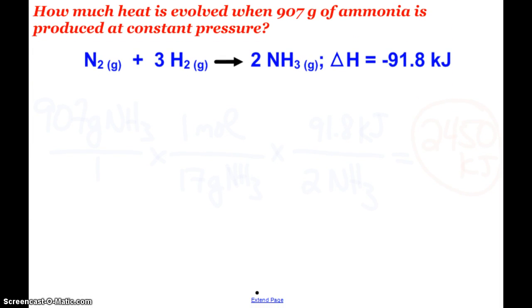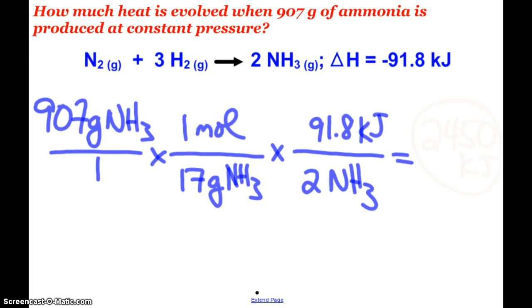And then, of course, we can use this enthalpy change in stoichiometry problems. So here's the reaction again. It says, how much heat is evolved when 907 grams of ammonia is produced at constant pressure? Well, I simply have to do a stoichiometry problem starting with 907 grams of ammonia.